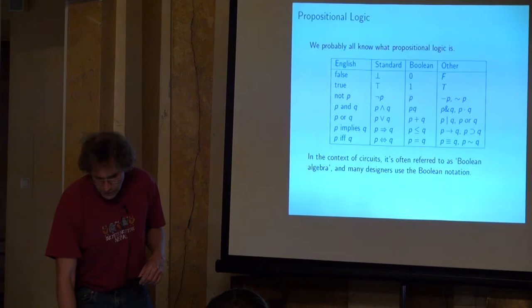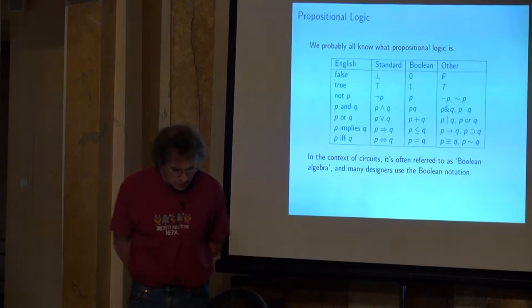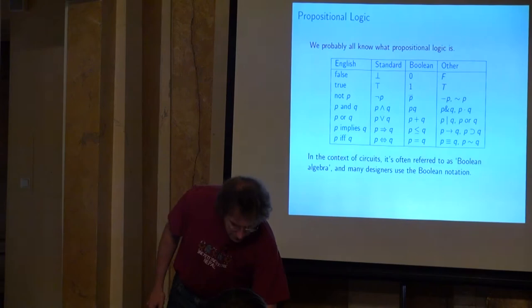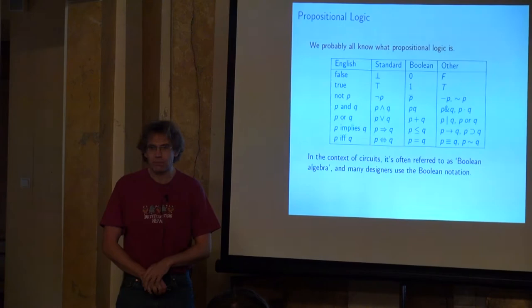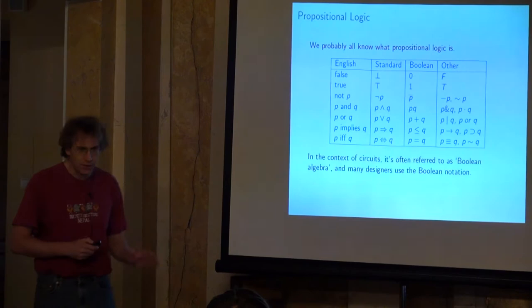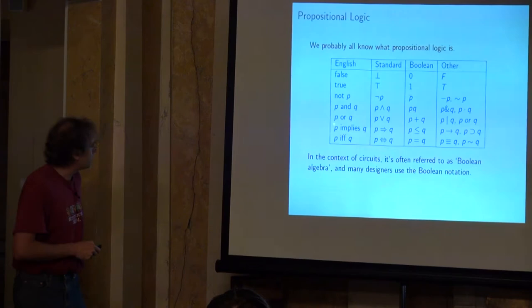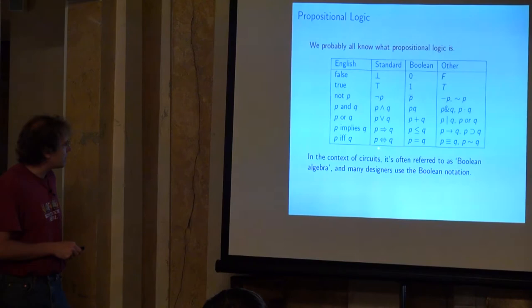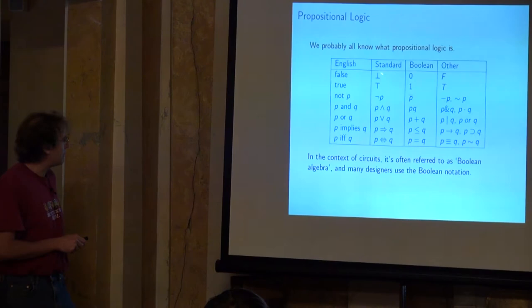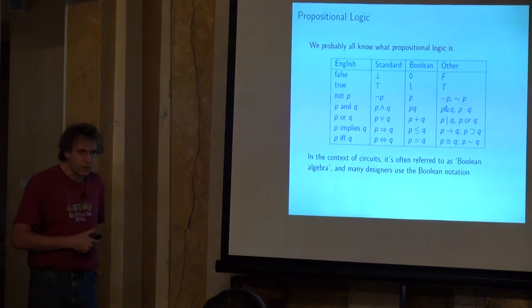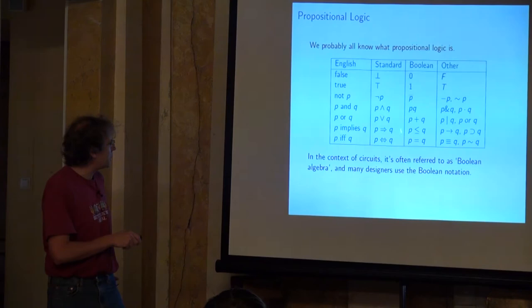That's enough background material. For the rest of this first lecture I want to talk about propositional logic. I'm assuming most people already have some passing familiarity with it, but just to fix the notation, let me summarize in this table. I'll use these notations for logical formulas — false, true, not-p, p-and-q, p-or-q, p-implies-q, and p-if-and-only-if-q. There are other notations; this is what Boole used in the old days, and here are some other common ones you see.